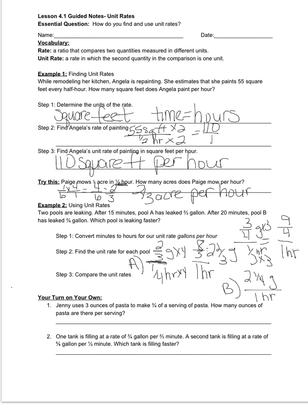Now I'll determine which pool is leaking faster. Both rates are now in the same unit — gallons per hour. Pool A leaks two and two-thirds gallons per hour, and pool B leaks two and one-fourth gallons per hour. Since two and two-thirds is greater than two and one-fourth, pool A is leaking faster.